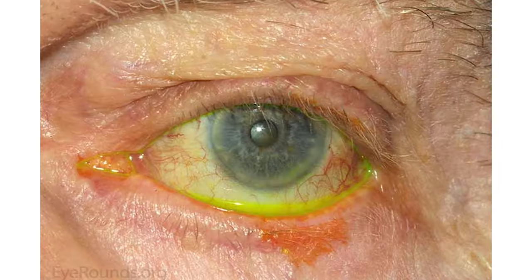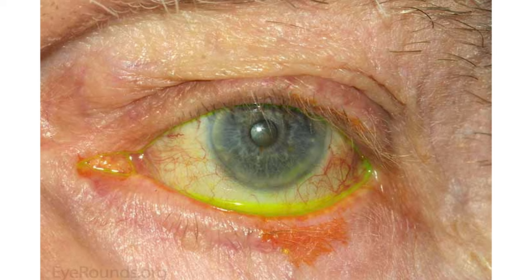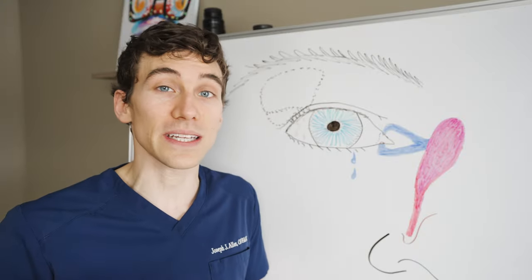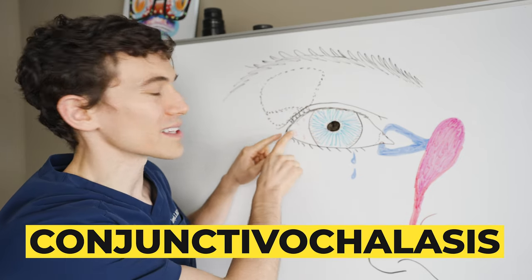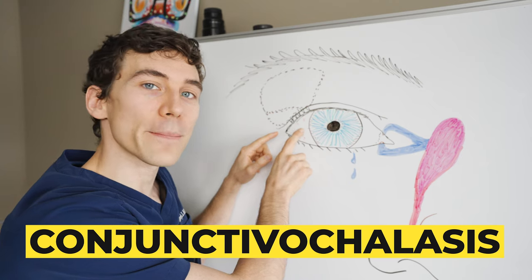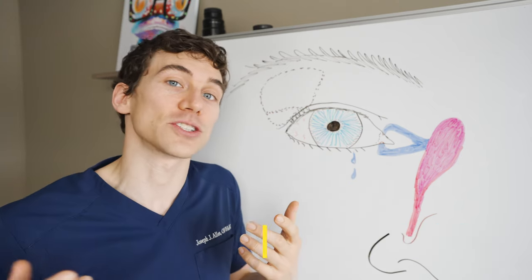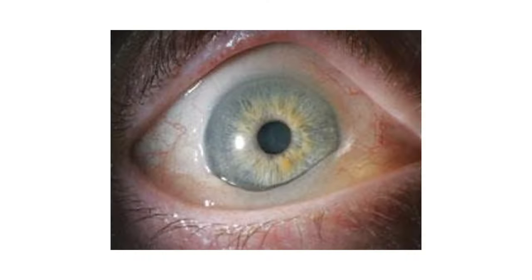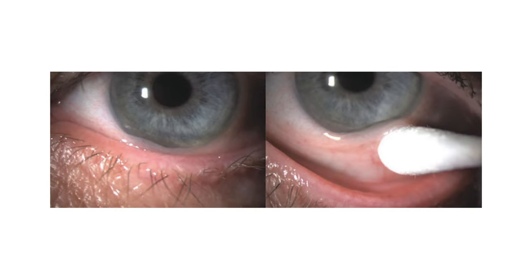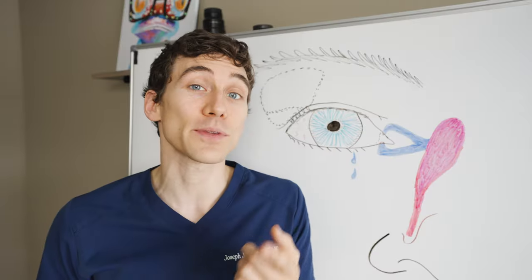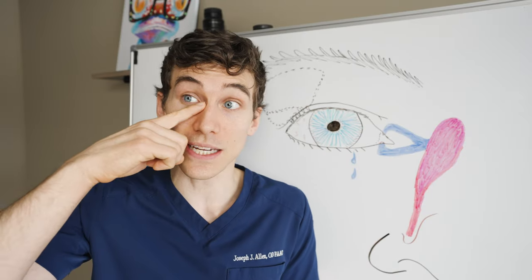Another issue that I see more commonly, even in young people, has to do with what's called conjunctival chalasis, and that's where this clear membrane on the front surface of the eye called the conjunctiva becomes inflamed and redundant, and then it ends up growing over and kind of flopping over the lower eyelid a little bit, and that prevents the tears from properly flowing to the nose.